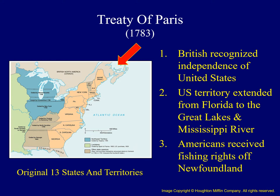Finally, the Americans also secured valuable fishing rights off the coast of Canada's Newfoundland, as shown with the arrow on this map.